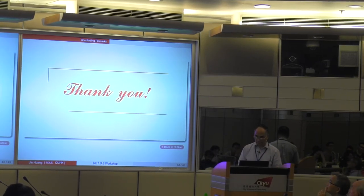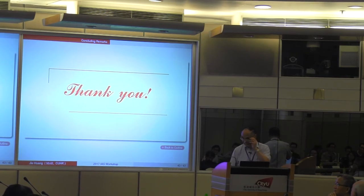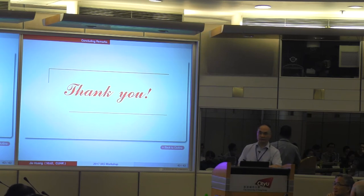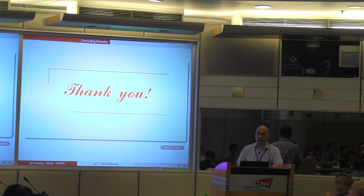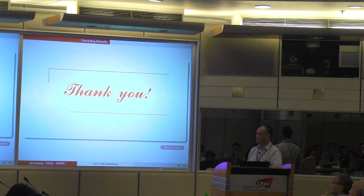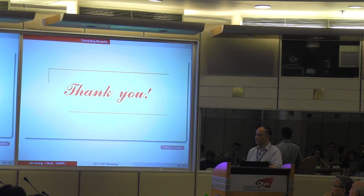Thank you for the talk, and thank you for leaving two minutes for questions. My question: you assume that everyone can estimate the states of the neighbors. What if the estimation is higher dimensional and you are able to estimate just part of it — some components, but not the full state? In that case, can you combine output feedback?